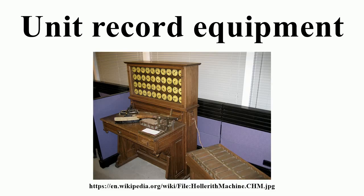1959 — BTM merges with former rival Powers Samas to form International Computers and Tabulators. 1959 — The IBM 1401, internally known in IBM as 'Space 4' (stored program accounting and calculating equipment), developed in part as a response to the Bull Gamma 3, outperforms three IBM 407s and a 604, while having a much lower rental; that functionality combined with the availability of tape drives accelerated the decline in unit record equipment usage. 1960 — The IBM 609 calculator, an improved 608 with core memory, was IBM's last punched card calculator.